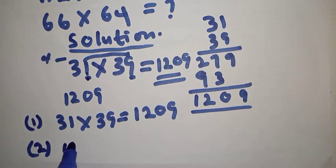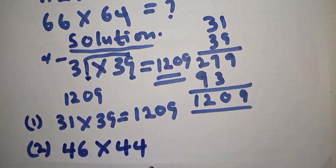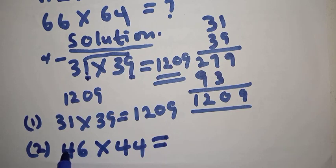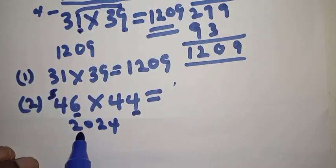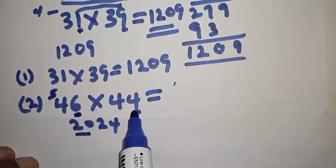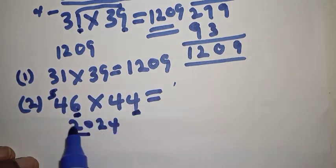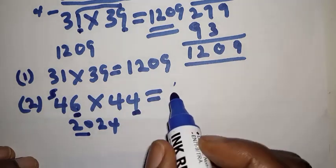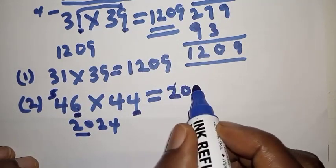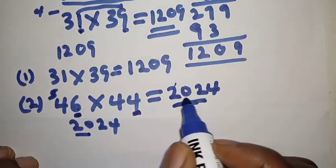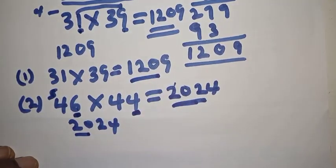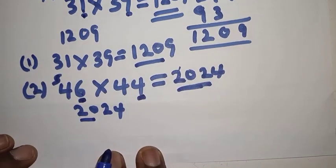Let's solve number two: 46×44. The tens digit is 4, the next digit after 4 is 5, so 5×4=20. Write 20. Then take the units digits: 6×4=24. Therefore 46×44=2024. You can see the answer is very simple.